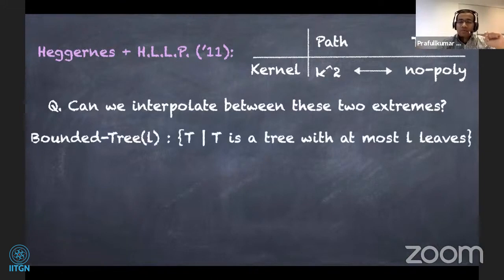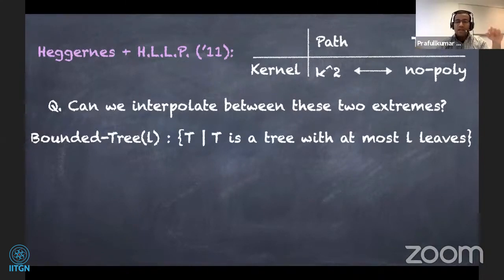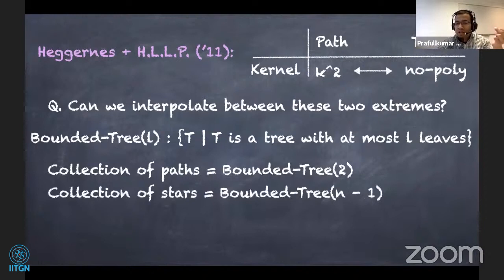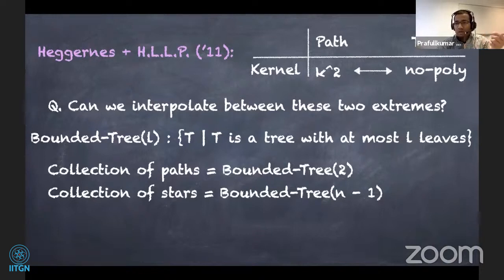Bounded trees are defined with respect to some parameter l, and are a subset of trees containing all subtrees with at most l leaves. With this notation, the collection of paths is a bounded tree with l equal to two, whereas the collection of stars are bounded trees whose number of leaves is almost n minus one. This gives us a finer view to look at subclasses of trees.